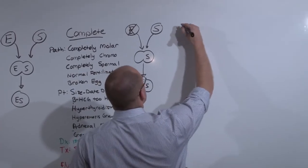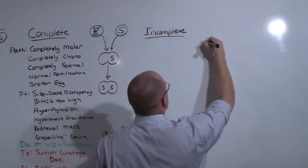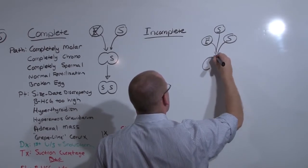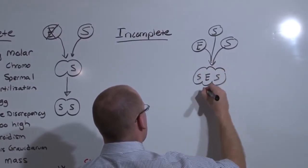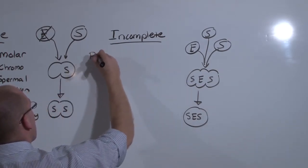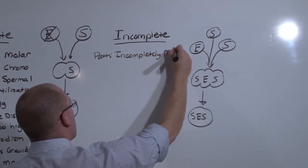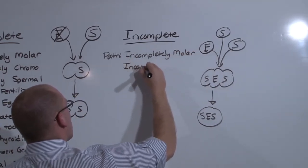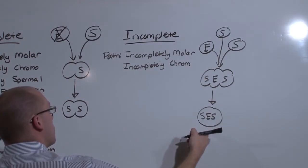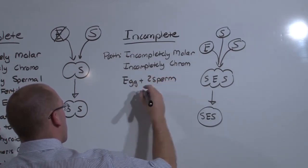In an incomplete mole, an egg is fertilized by two sperm. It's caused by dispermy. And therefore, inherently cannot have the normal amount of genetic complement. And an incomplete mole is incomplete. It is incompletely molar. That is, there are fetal parts. It is incompletely chromosomal. There's not a complement of 46. It's generally a complement of 69. It is a product of an egg being fertilized by two sperm. But it is a normal egg.